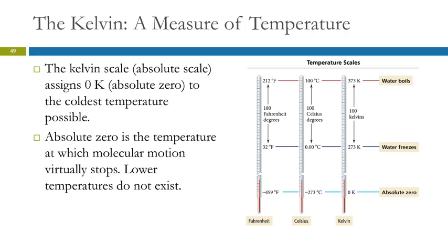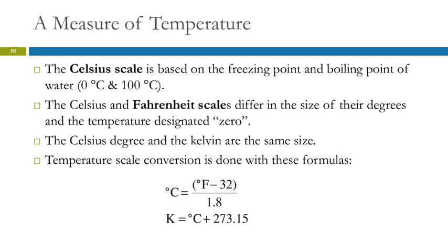Zero on the Celsius scale is an arbitrary assignment — we assigned it to be the temperature at which water freezes because it's convenient, and 100°C is where water boils. On the Fahrenheit scale, those temperatures are 32 and 212 — classic English unit, just random numbers. There are 100 Celsius degrees between freezing and boiling, whereas there are 180 Fahrenheit degrees. A Kelvin is the same size as a degree Celsius; the difference is just where zero is placed. The offset between them is 273.